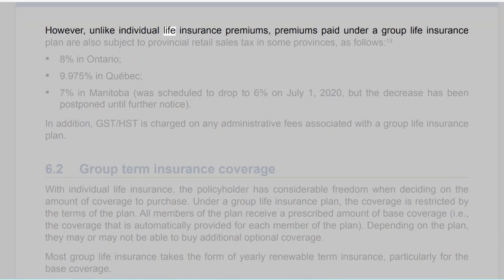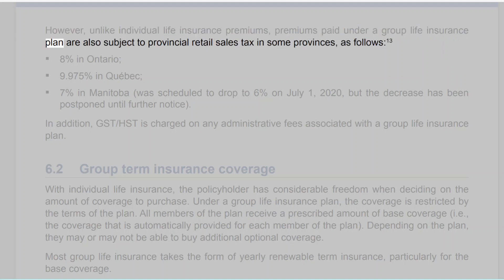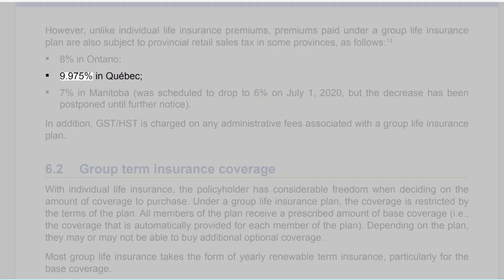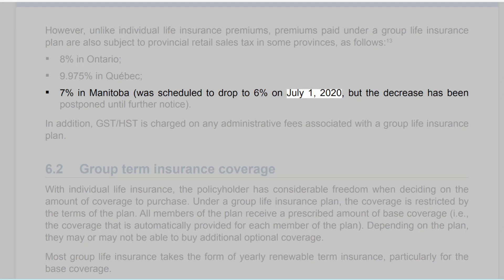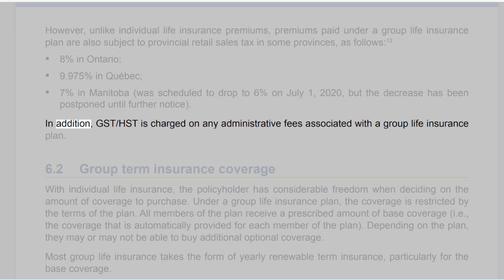However, unlike individual life insurance premiums, premiums paid under a group life insurance plan are also subject to provincial retail sales tax in some provinces: 8% in Ontario, 9.975% in Quebec, and 7% in Manitoba (which was scheduled to drop to 6% on July 1, 2020, but the decrease has been postponed until further notice). In addition, GST/HST is charged on any administrative fees associated with a group life insurance plan.